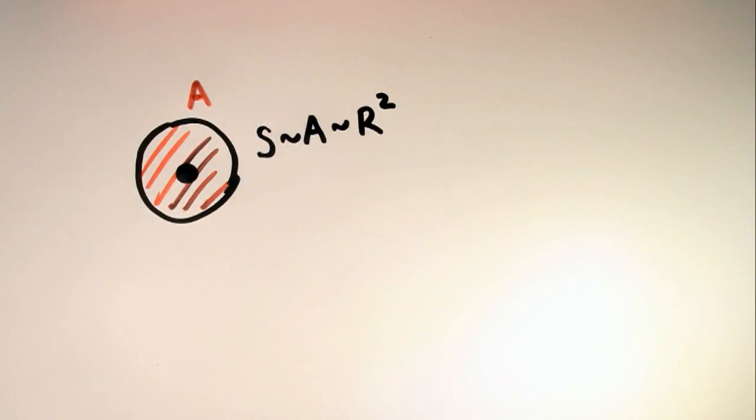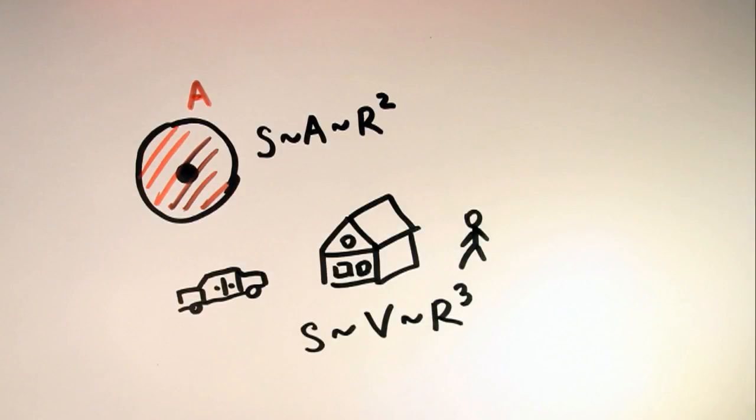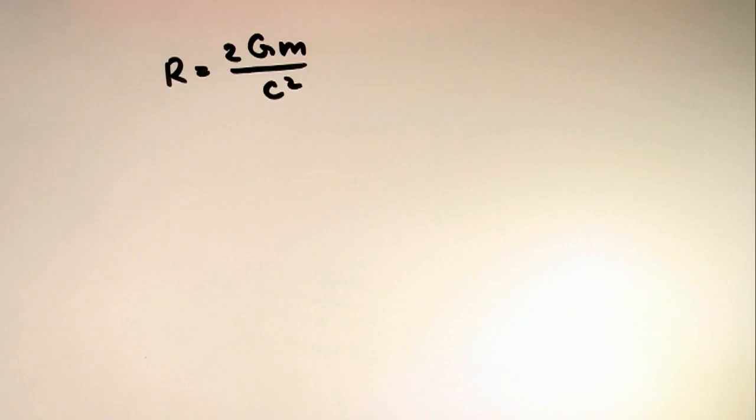What is extremely weird is that entropy of black hole is proportional to the area of the event horizon, meaning proportional to the square, while every other body in the universe has an entropy proportional to its volume, meaning cube. Remember that Schwarzschild equation?